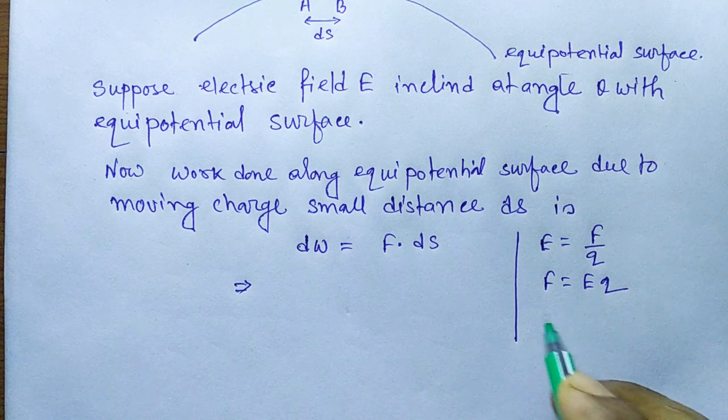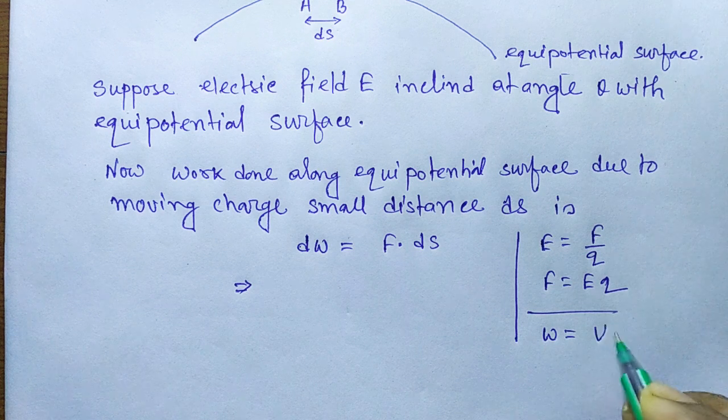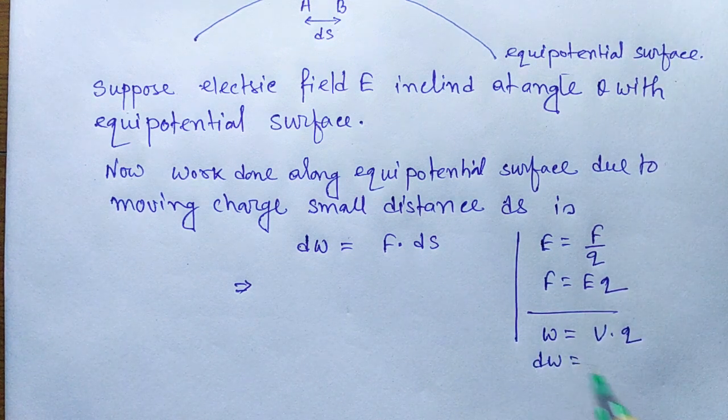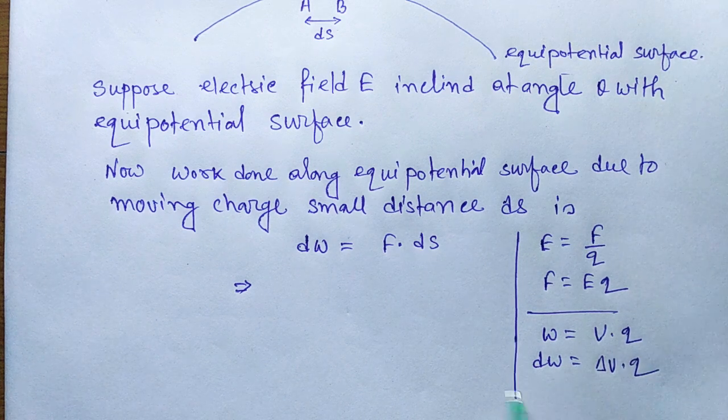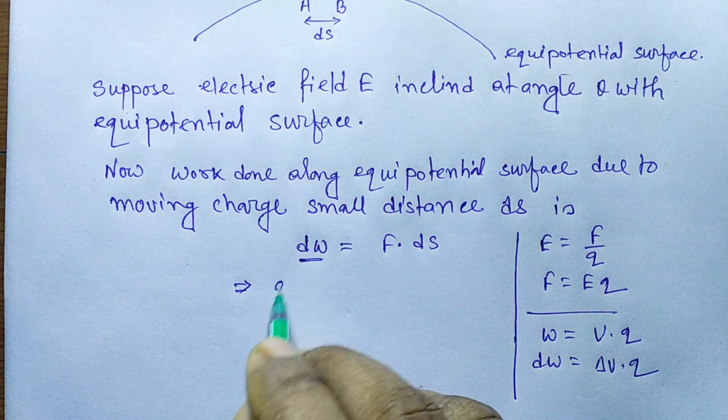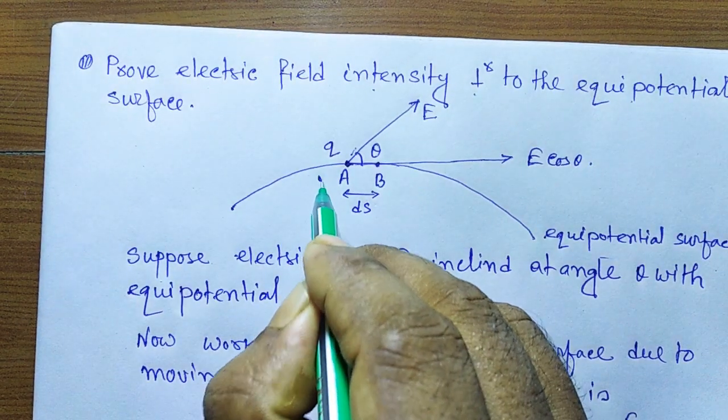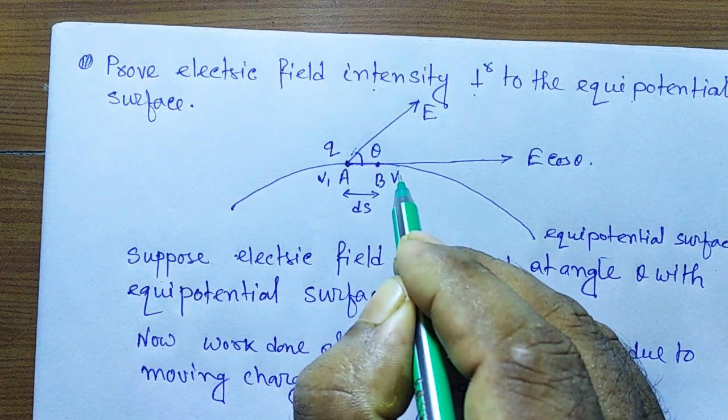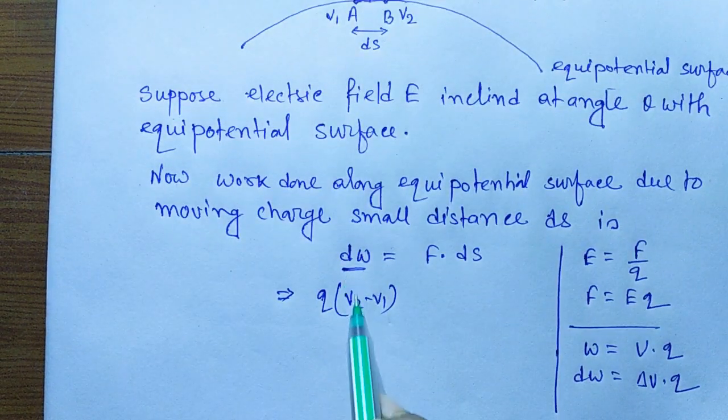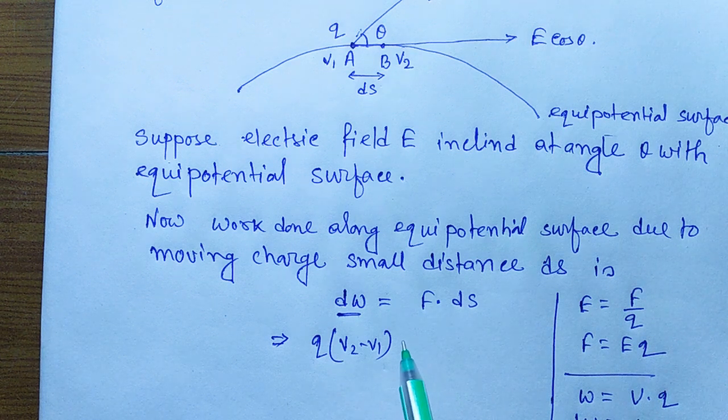Also, we know that work done equals V times Q. So change in work done equals change in potential times Q. In place of dW we can write Q times (V₂ minus V₁). If the potential at point A is V₁ and at point B is V₂, then dW equals Q times (V₂ minus V₁).